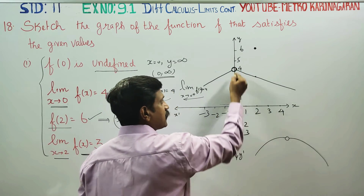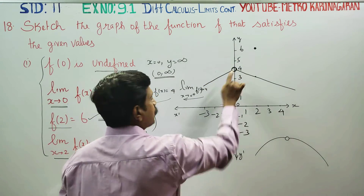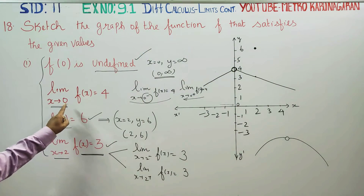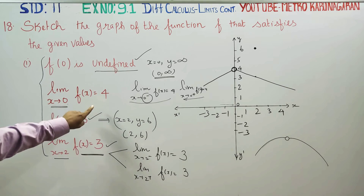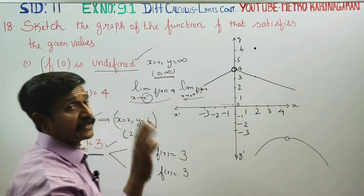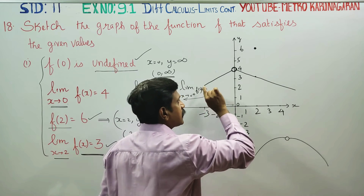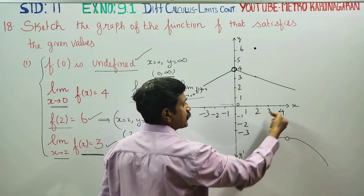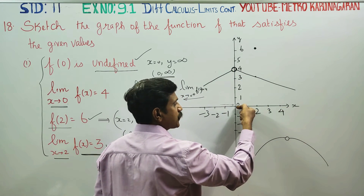So I can reach 4. The first condition is over. For the second condition — both the left-hand side of 0 and the right-hand side of 0 — the graph can reach 4. From the left-hand side I can reach 4, and from the right-hand side I can also reach 4.